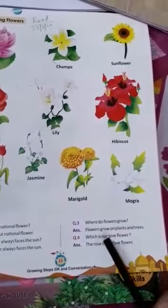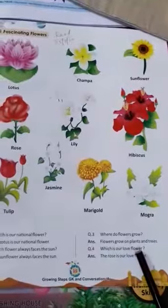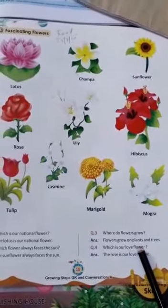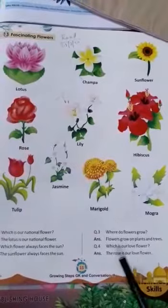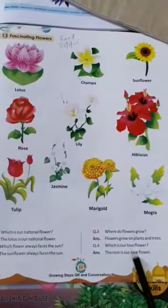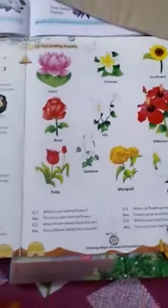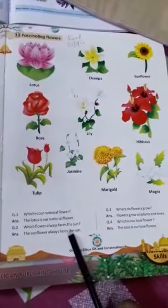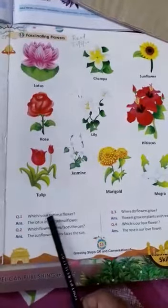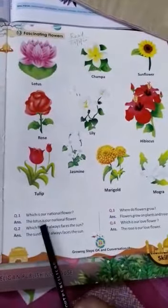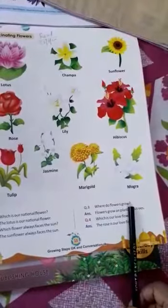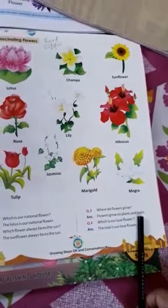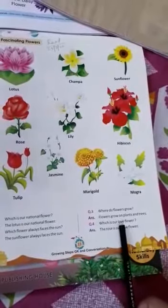Which is our love flower? The rose is our love flower. If you cannot remember the full sentence, you can also say only the answer. Like: which is our national flower? — the lotus. Which flower always faces the sun? — the sunflower. Where do flowers grow? — on plants and trees. Which is our love flower? — the rose.